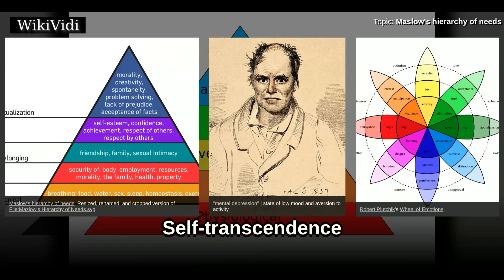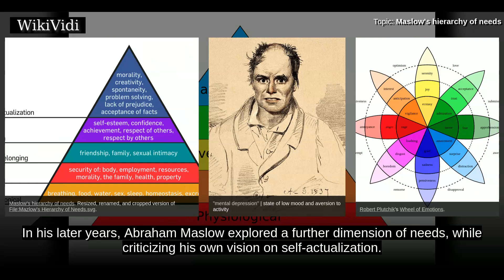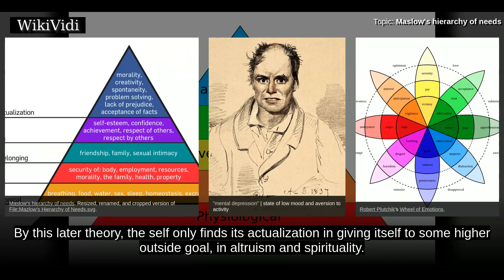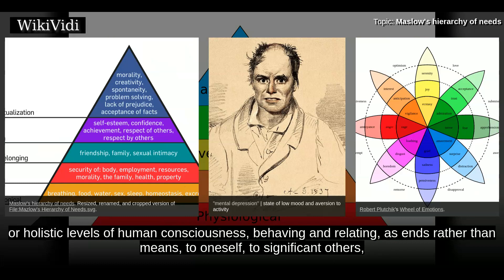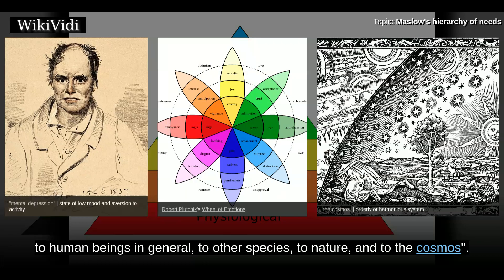In his later years, Abraham Maslow explored a further dimension of needs while criticizing his own vision on self-actualization. By this later theory, the self only finds its actualization in giving itself to some higher outside goal, in altruism and spirituality. He equated this with the desire to reach the infinite. Transcendence refers to the very highest and most inclusive, or holistic, levels of human consciousness — behaving and relating as ends rather than means, to oneself, to significant others, to human beings in general, to other species, to nature, and to the cosmos.